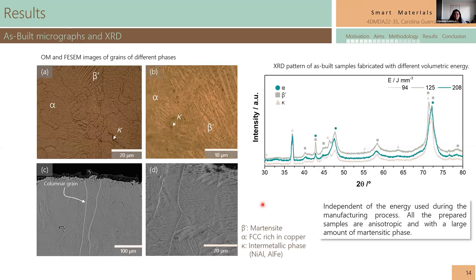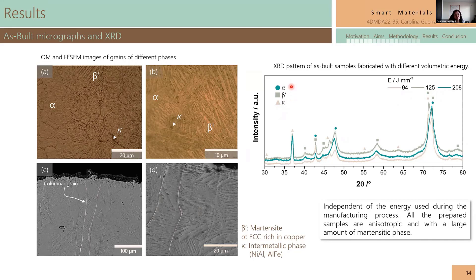We also characterized all the phases obtained. Here are optical microscopy images and cross-sections taken by FESEM. The XRD patterns of samples produced at different volumetric energies show that most of them are composed of a large amount of beta prime phase, which is the martensite — the metastable microstructure — along with alpha phase, which is rich in copper, and kappa phases, which are intermetallic compounds. As you see in the pictures, the acicular features are the beta prime phase, and the other grains are mainly copper.